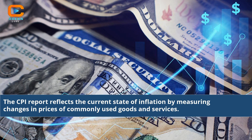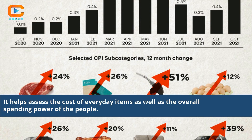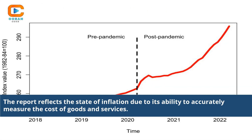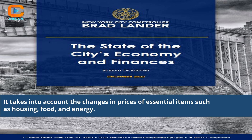The CPI report reflects the current state of inflation by measuring changes in prices of commonly used goods and services. It helps assess the cost of everyday items as well as the overall spending power of the people. CPI data can be used to gauge the changes in the cost of living and developing economic policies. The report reflects the state of inflation due to its ability to accurately measure the cost of goods and services. It takes into account the changes in prices of essential items such as housing, food, and energy.